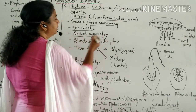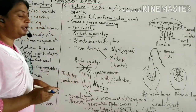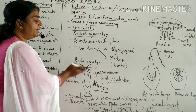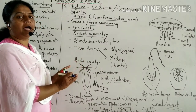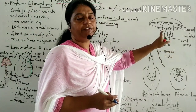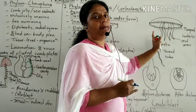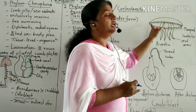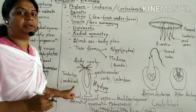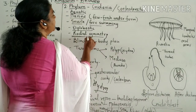Their symmetry is radial symmetry. Hydra shows hexameral radial symmetry because the body can be cut into six equal halves. The body of Aurelia (jellyfish) can be cut into four equal halves — tetrameral radial symmetry. So these animals show radial symmetry.